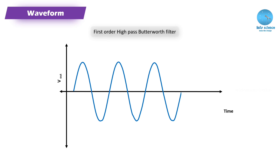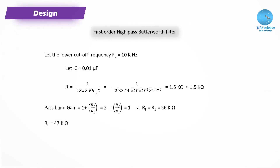We are moving to the designing section of this experiment. For a first order high pass filter, our lower cut frequency is designed to be 10 kHz. Signals below 10 kHz will be blocked, and signals above 10 kHz will be bypassed. We set the lower cutoff frequency fL to 10 kHz.